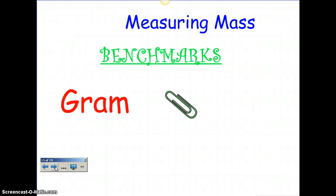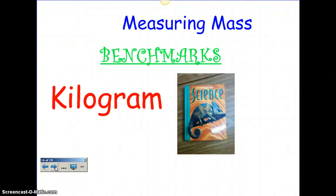Let's talk about measuring mass. A metric unit for measuring mass would be the gram, and a gram is about as light as a paper clip. Whenever you're thinking about a kilogram, that's about the weight of a textbook, like our science or math textbook. A gram is something really small and a kilogram is a little bit bigger. There are 1,000 milligrams in a gram, and there are 1,000 grams in a kilogram.